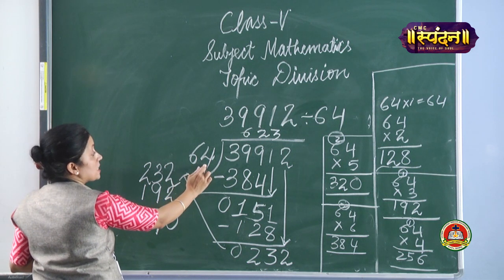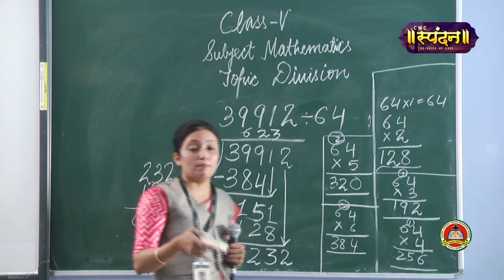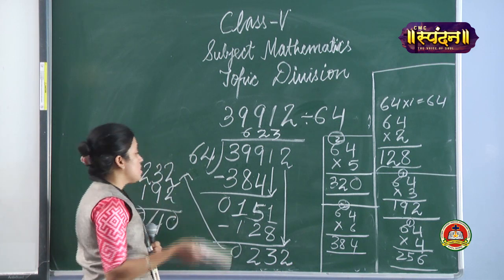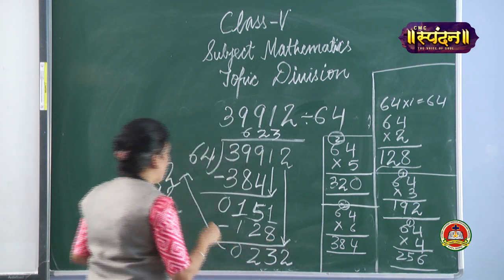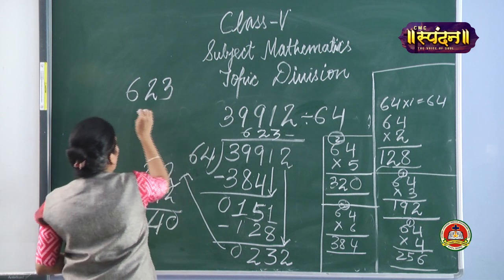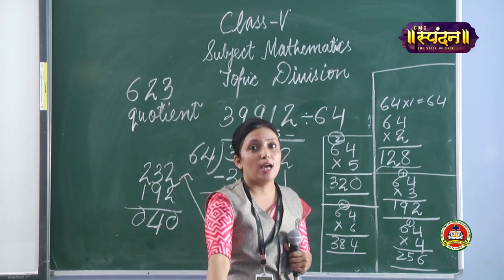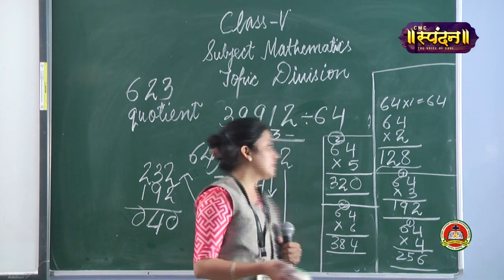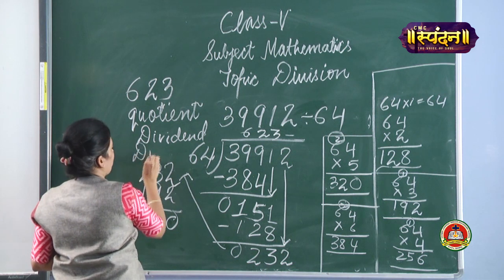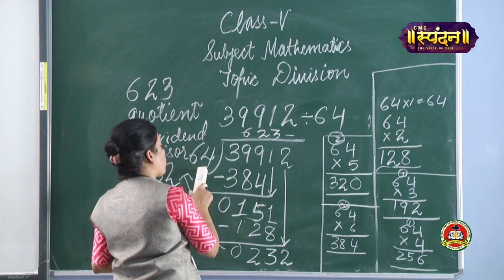Now 40 is smaller than 64, so we cannot divide further. The answer, which is called the quotient, is what we have written above. The number being divided is called the dividend, and the number we are dividing by is called the divisor. The leftover 40 is the remainder.